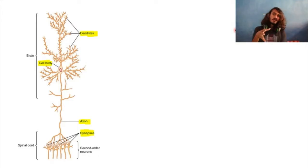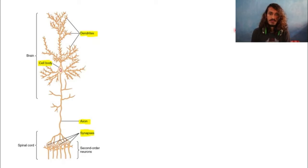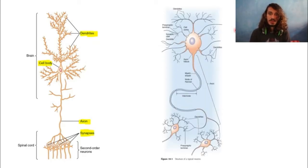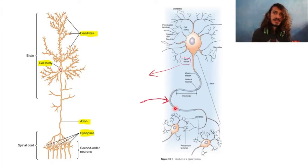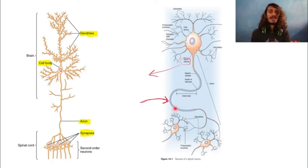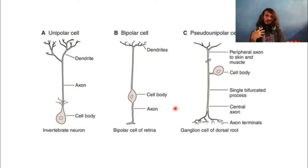One neuron receives input from multiple different neurons, and one gives to many others as well. This is an example of an unmyelinated neuron. A myelinated neuron has an axon hillock — the point where the cell body ends and axon begins — followed by the axon, with a myelin sheath covering it. You can see the difference between an unmyelinated and a myelinated neuron here.